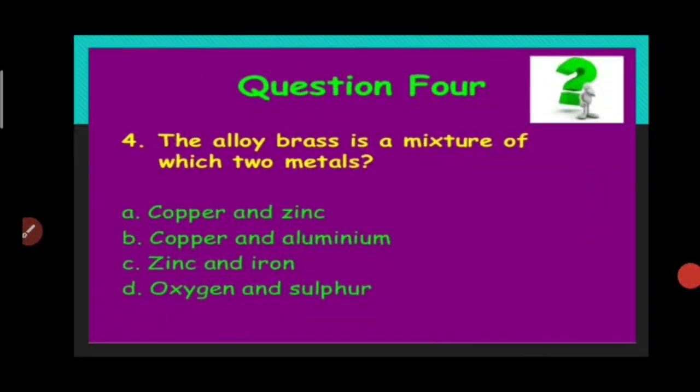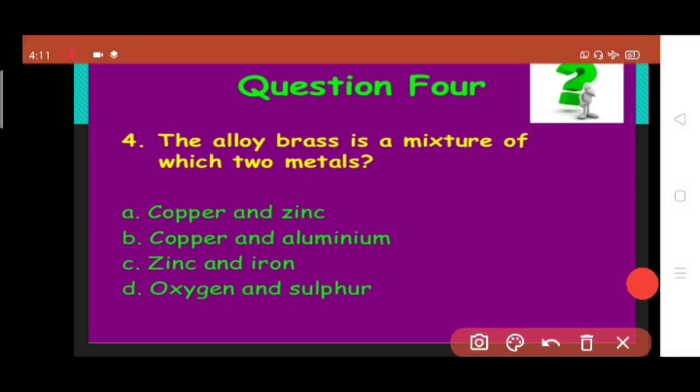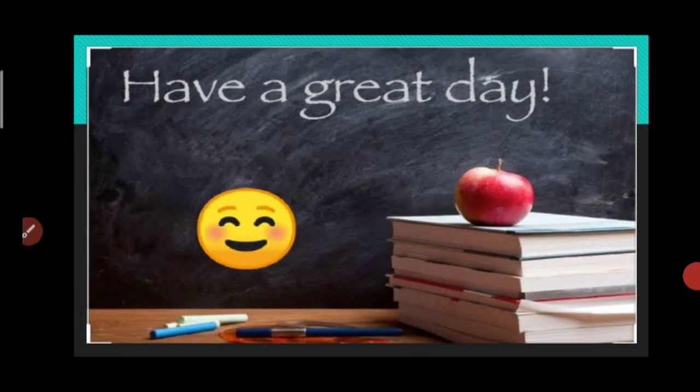Question number four: The alloy brass is a mixture of which two metals? Copper and zinc, copper and aluminium, zinc and iron, or oxygen and sulfur? The answer is copper and zinc. So that's all for today. Thank you so much, and have a great day ahead.